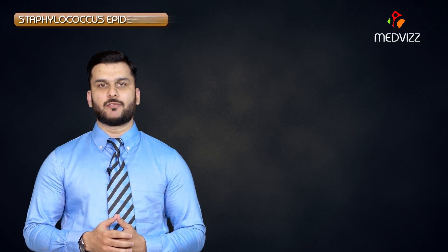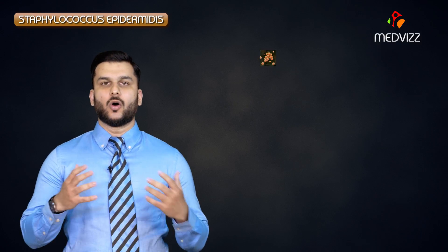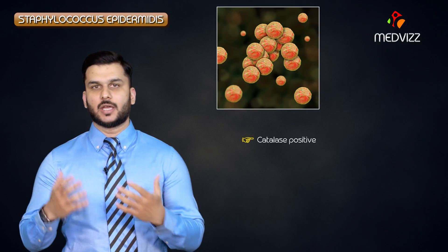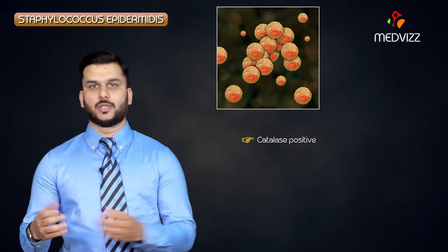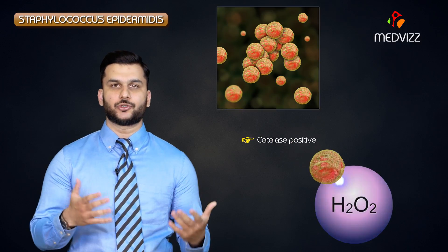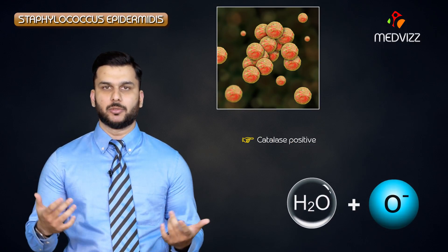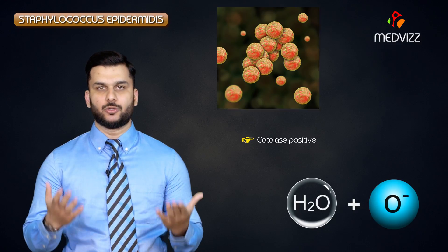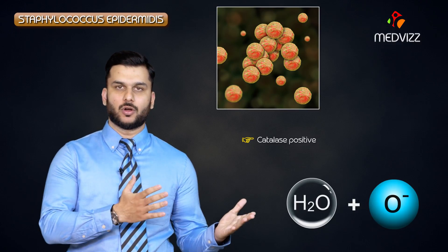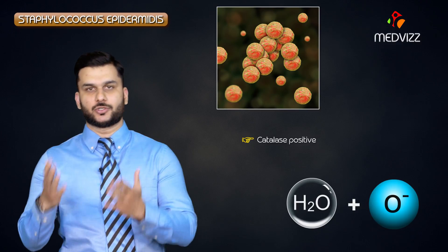Now let's talk about other species of the Staphylococcus genus. Another species we are going to talk about is Staph epidermidis. All staphs are catalase positive, meaning they break down hydrogen peroxide into water, producing bubbles. This is a very quick test we use to differentiate the Staphylococcus genus from Streptococcus.